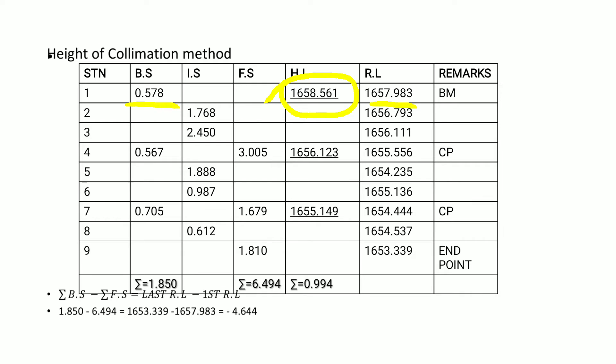I use that height of instrument to subtract any reading made at the same instrument station. So: 1658.561 minus 1.768 gives 1656.793. Then 1658.561 minus 2.40 gives 1656.161. Then using the same height of instrument, 1658.561 minus 3.005 gives the reduced level at station 4 as 1655.556.